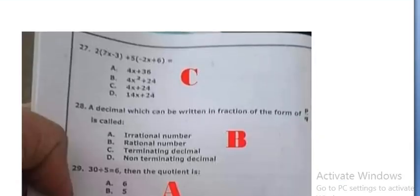2 into 7x minus 3 plus 5 into minus 2x plus 6 is equal to 4x plus 24, option C.